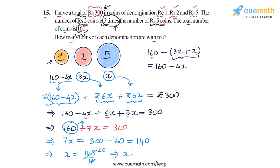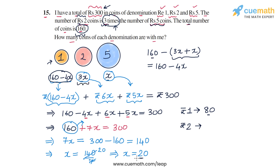With x = 20, the number of 1-rupee coins is 160 − 4(20) = 160 − 80 = 80. The number of 2-rupee coins is 3x = 60. The number of 5-rupee coins is x = 20. So the answer is: 80 one-rupee coins, 60 two-rupee coins, and 20 five-rupee coins. This completes question number 15.